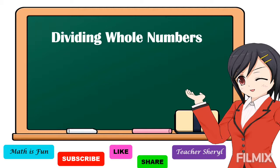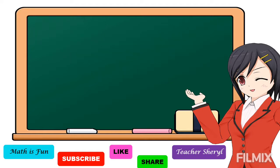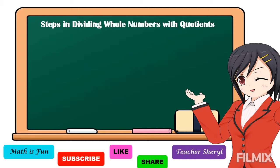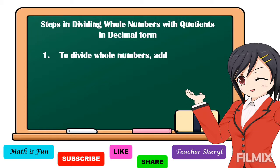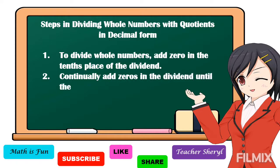Our lesson for today is all about dividing whole numbers with quotients in decimal form. Here are the steps: number one, to divide whole numbers, add zero in the dividend; number two, continually add zeros in the dividend until the difference is equal to zero.